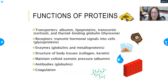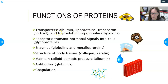What do proteins do in the body? They function as transporters — albumin moves drugs and other molecules. Lipoproteins transport lipids. Transcortin transports cortisol, thyroid-binding globulin (TBG) carries thyroxine, and so on. Some proteins function as receptors found on the surface of cells, transmitting hormonal signals into the cells. Glycoproteins are such proteins — your ABO proteins, for example, are glycoproteins on your red cells.